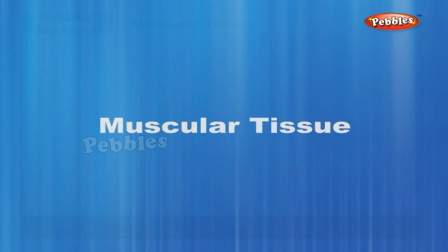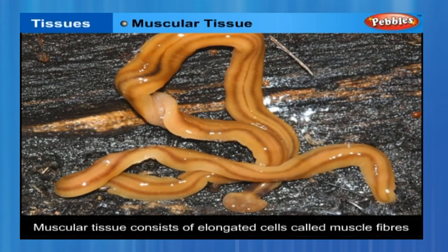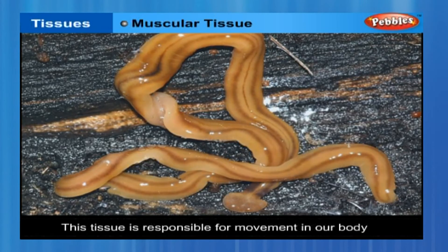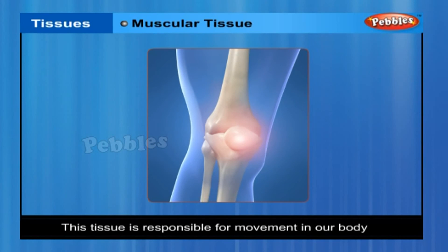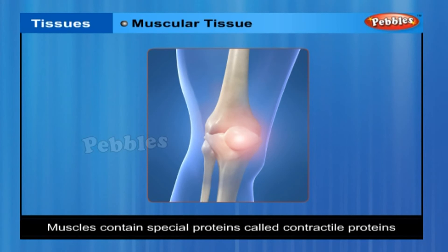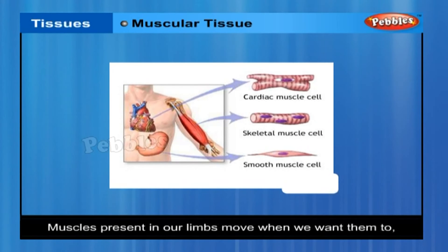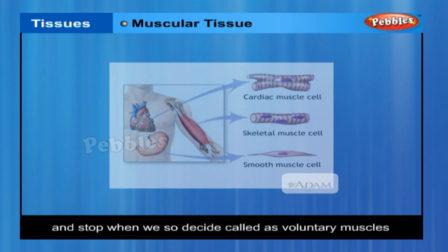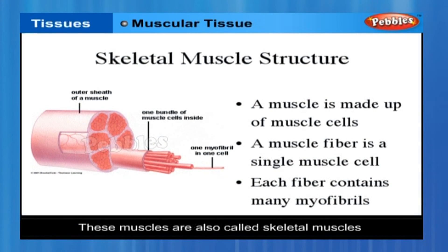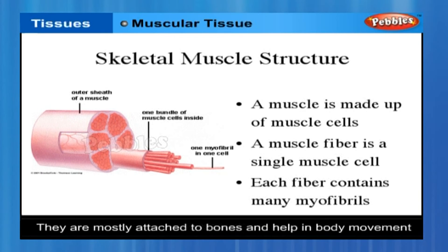Muscular tissue. Muscular tissue consists of elongated cells, also called muscle fibres. This tissue is responsible for movement in our body. Muscles contain special proteins called contractile proteins which contract and relax to cause movement. Muscles present in our limbs move when we want them to and stop when we decide. Such muscles are called voluntary muscles. These muscles are also called skeletal muscles as they are mostly attached to bones and help in body movement.